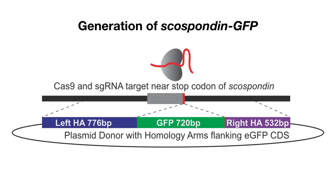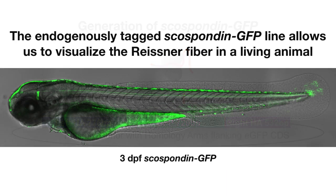To further investigate the Reissner fiber, we generated a GFP-tagged scospondin allele. We used CRISPR-Cas9 to cut near the stop codon and provided a plasmid donor with homology arms flanking the GFP coding sequence. We used PCR to identify a founder and established a stable endogenously tagged scospondin-GFP line that allows us to visualize the Reissner fiber in a living animal.